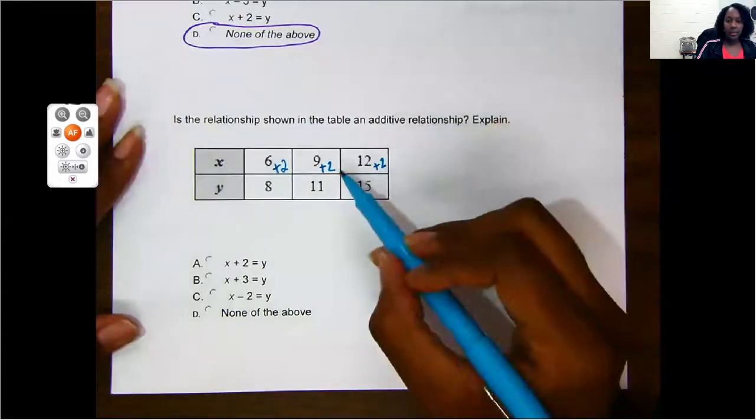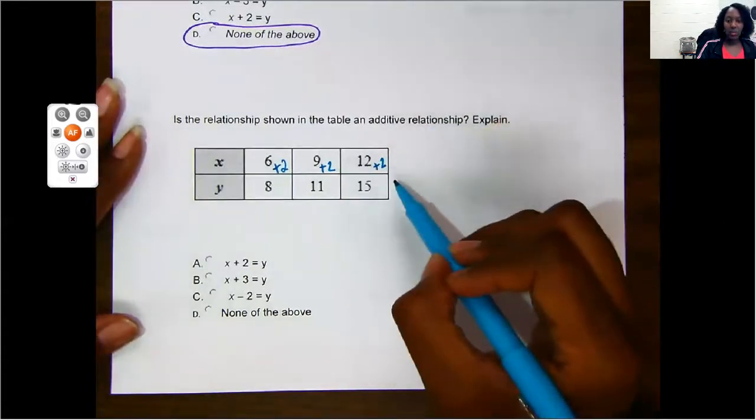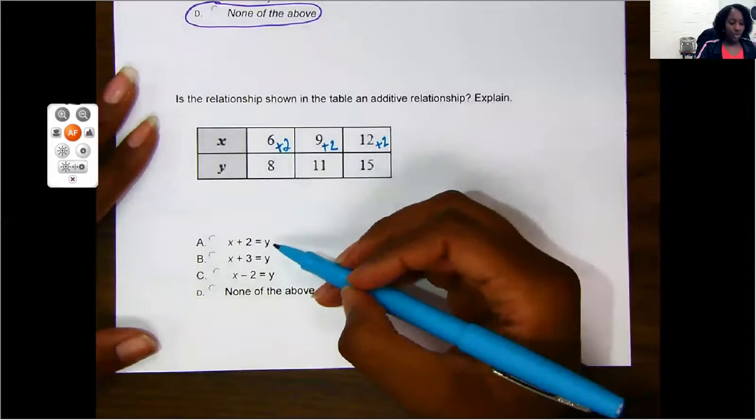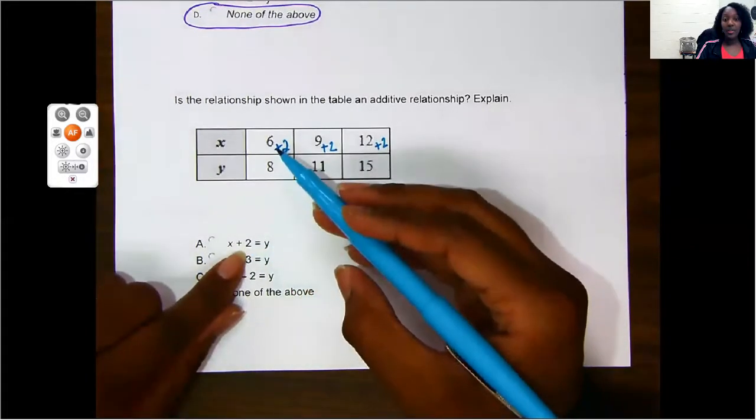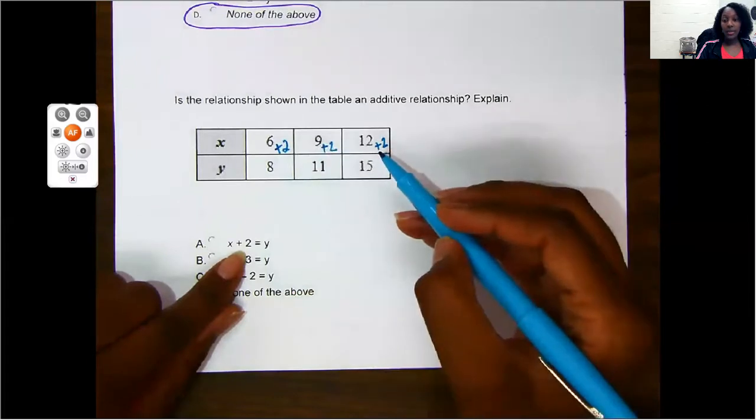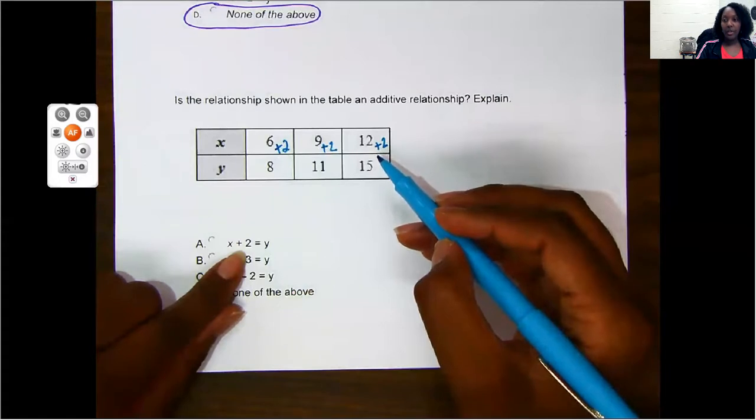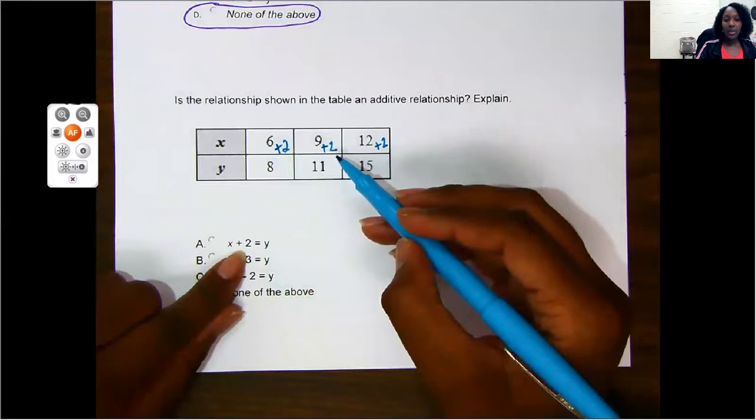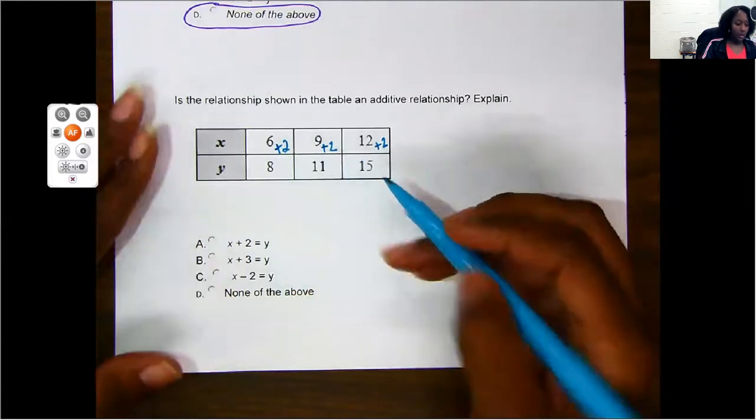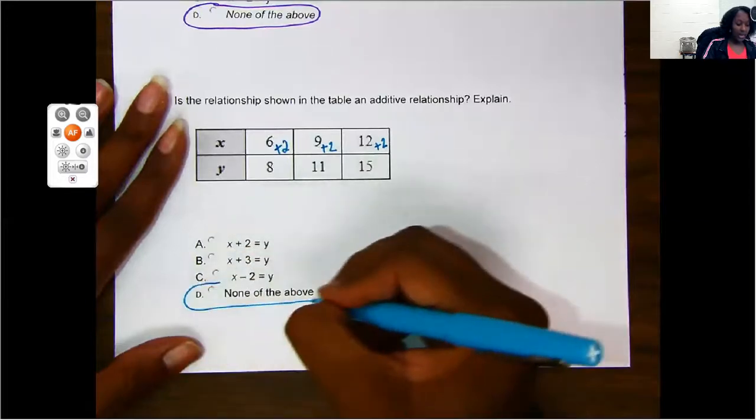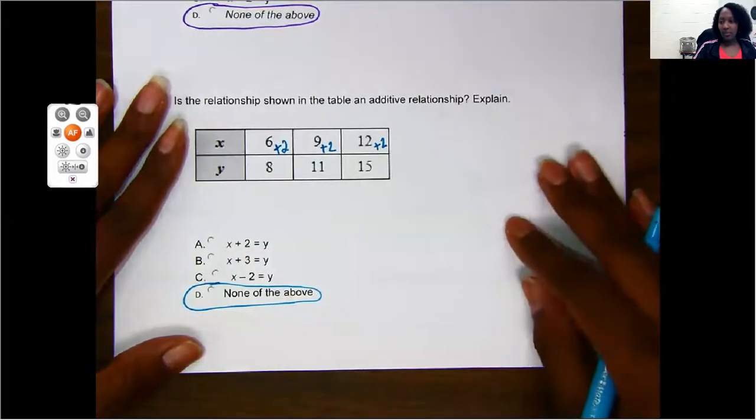Now, that might have been a trick one because it does have x plus 2. Remember, you need to check all of your answer choices to make sure that the equation that you're coming up with is actually correct, okay? So plus 2 probably would have been a good choice for us, but it doesn't work with the last ordered pair. So again, we're going to select none of the above, okay?